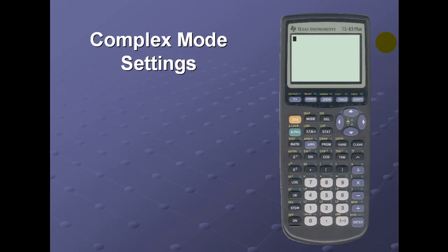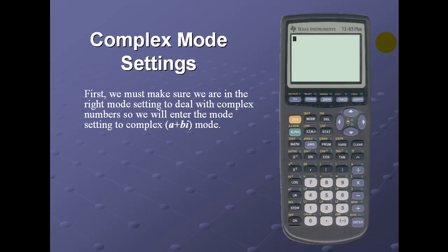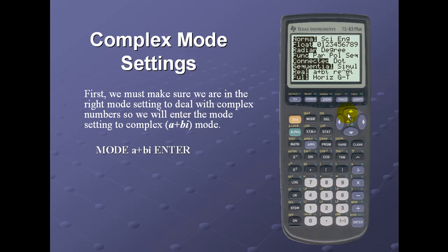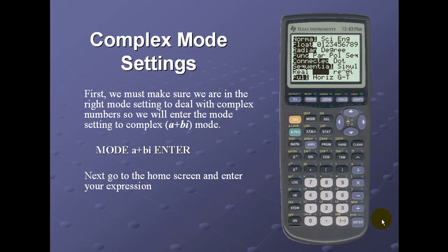Complex mode settings for the calculator. First we need to make sure we're in the right mode settings to deal with complex numbers. We will enter the mode and change our settings to complex or a + bi mode. So first we'll go to mode, select a + bi which is the complex form, scroll down, over to the right, and press enter to lock it in. Next, go to the home screen using the quit feature: second and mode.